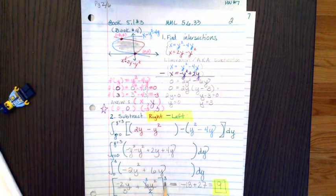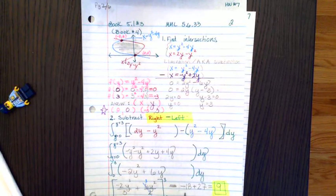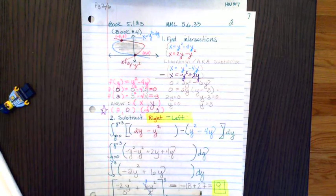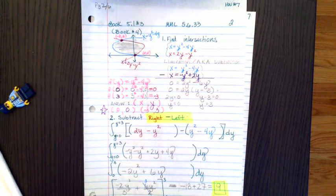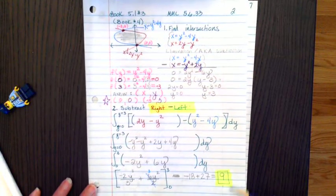Substituting in a 3 for y gives us negative 18 plus 27. Substituting in a 0 for y gives us 0. And so we get a final result of 9. So the area between those two curves is 9.